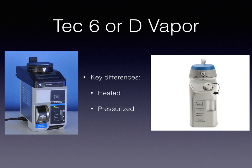Let's talk about the TEC-6 or D-vaporizer. These have two key differences: they're both heated to 23 to 25 degrees Celsius, and they're pressurized with a back pressure regulator to 1500 millimeters mercury — or about two atmospheres of pressure — to create an environment in which the anesthetic has relatively lower but predictable volatility.